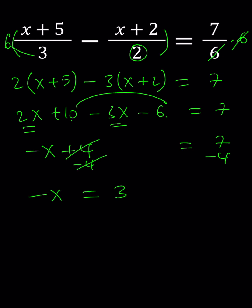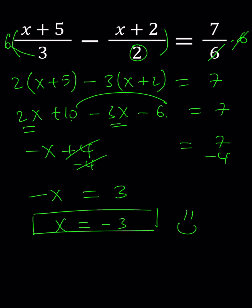This is where a lot of people get stumped, but don't worry, it's fairly easy. You kind of have to think of it this way: the opposite of which number equals 3? And you'll immediately know that the answer is negative 3. And that's it.